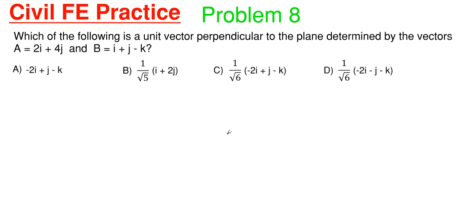So this will be our eighth practice problem. And what we have going on here is that we have to find out which of the following is a unit vector perpendicular to the plane determined by vectors A equals 2I plus 4J and B equals I plus J minus K.